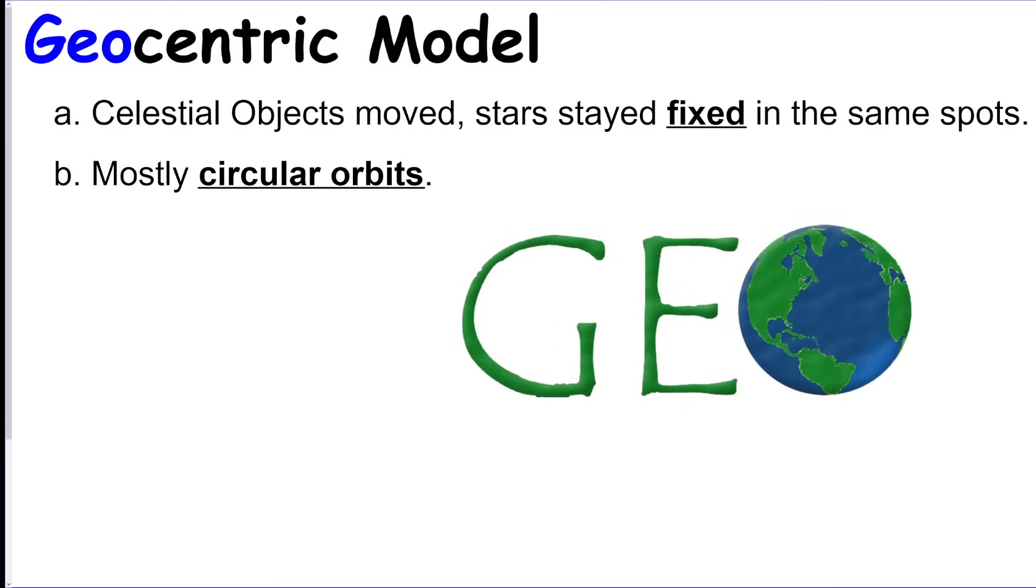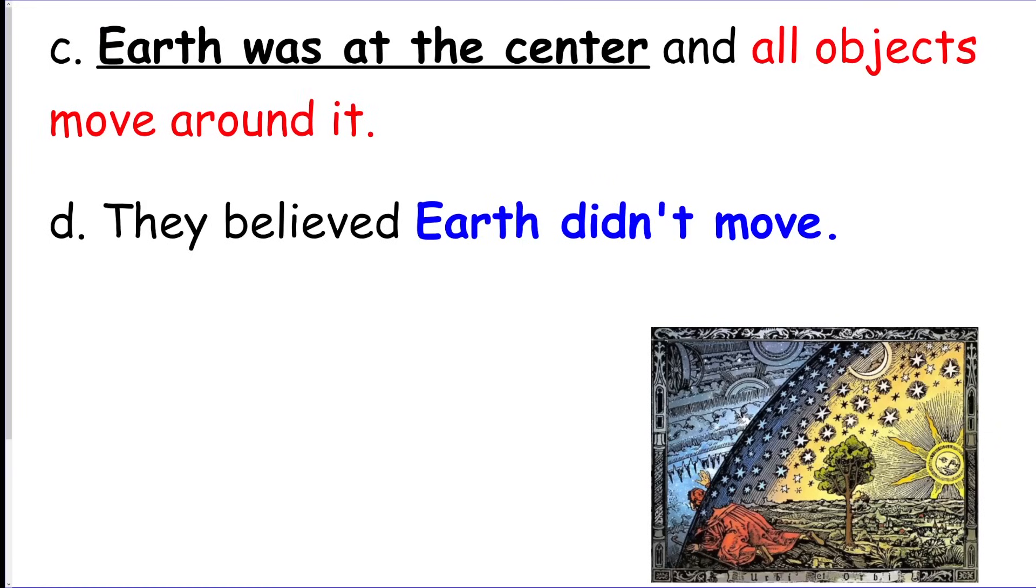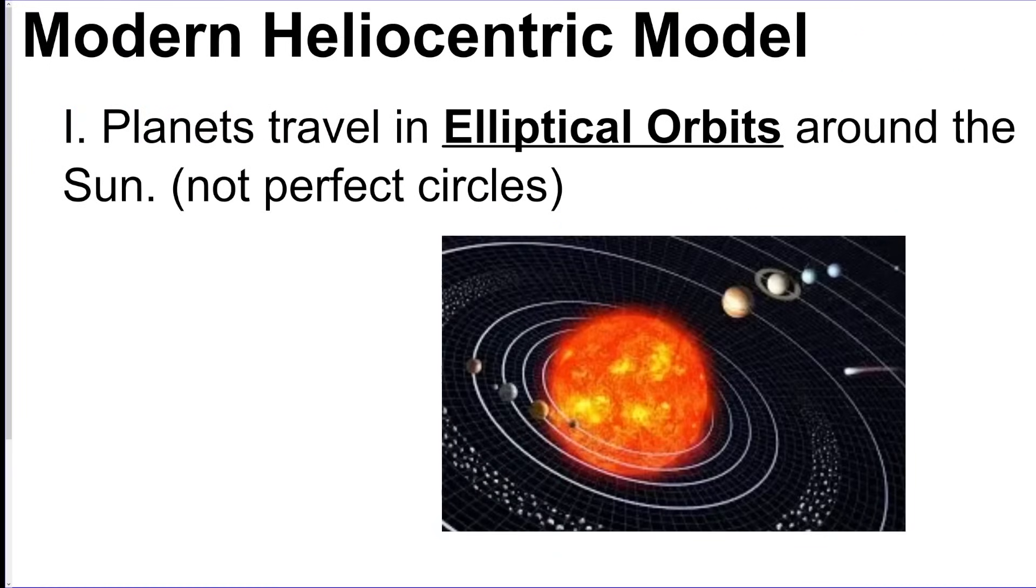All right, going into some solar system stuff. We had the geocentric model at first. This is when the Earth was in the center and all the planets traveled in circular orbits. We have the modern heliocentric model. This is right now, so we have the Sun in the middle—that's what heliocentric means—and all the planets travel in elliptical orbits, which are sort of like ovals, so they're not perfect circles.